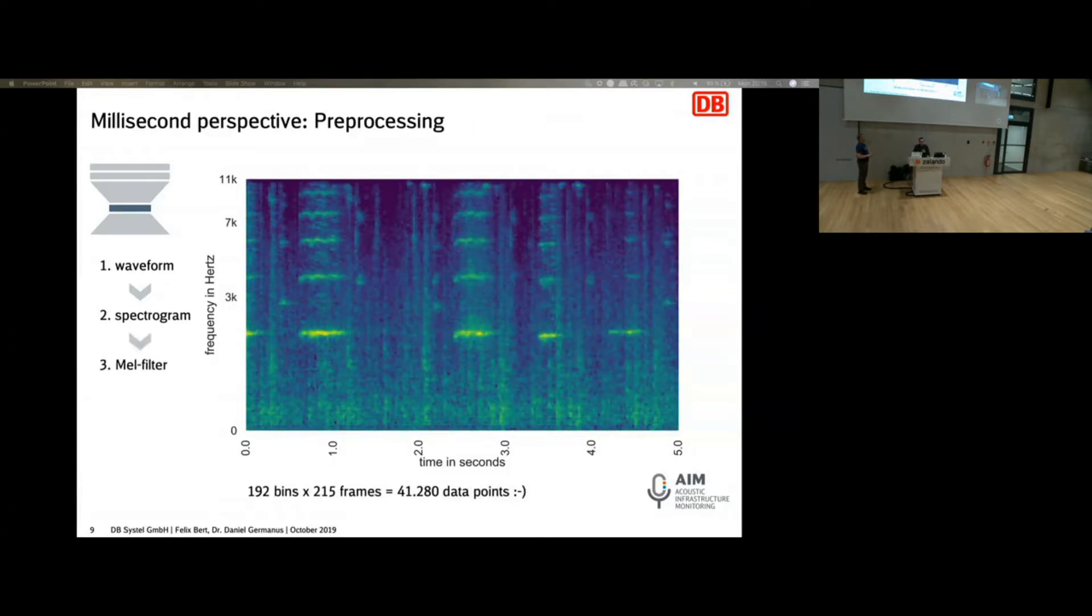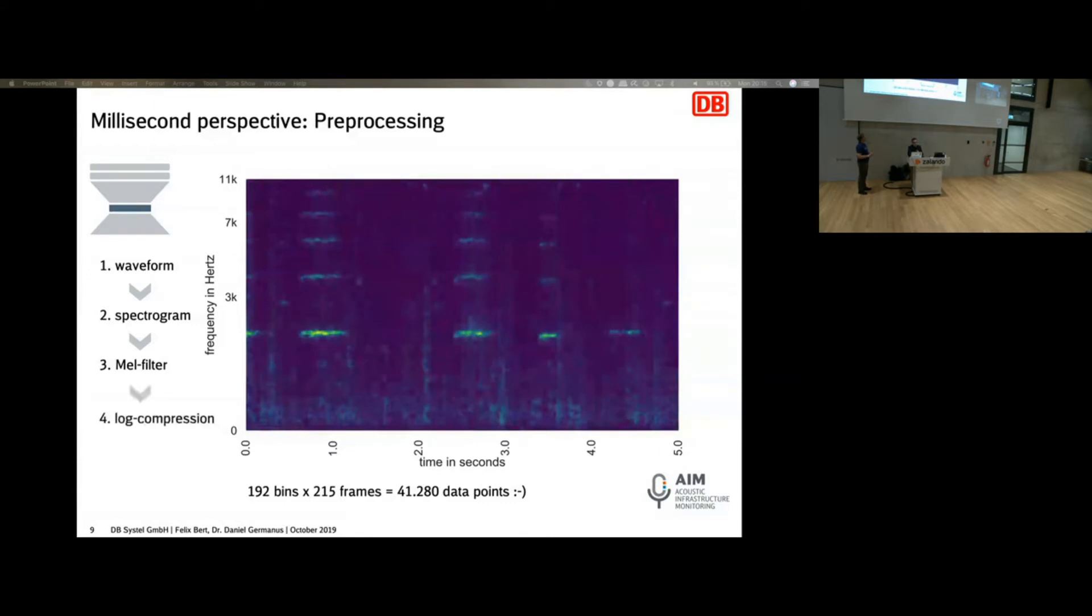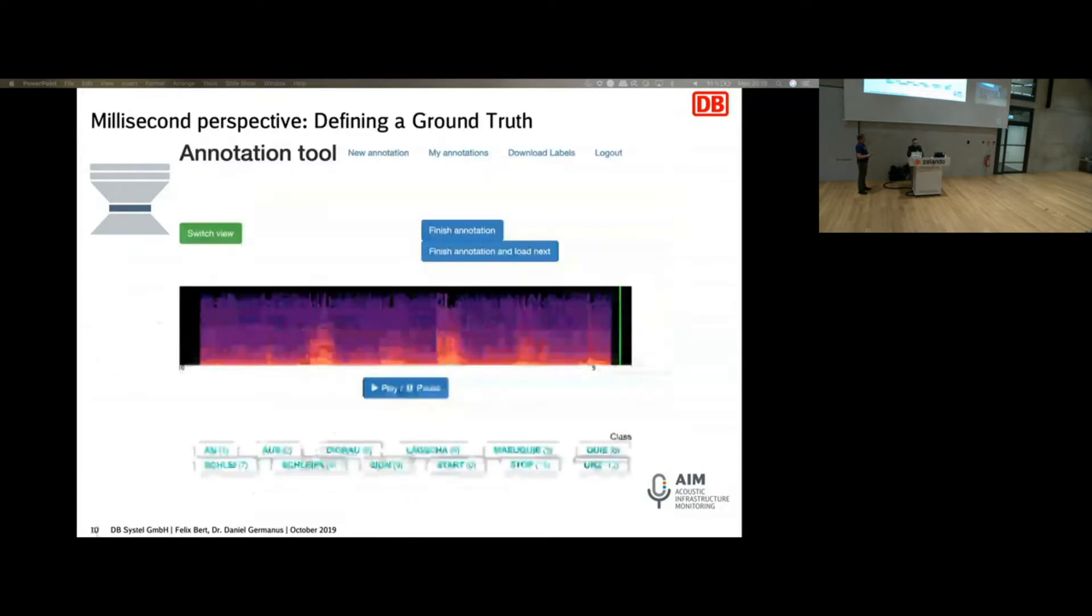But that still has a lot of data points. And if you apply what's called MEL filtering, you don't lose too much of the information, but you reduce the amount of data points you need for training. And also some log compression is typically used to make the interesting parts stand out more. So this is what we are using for learning.